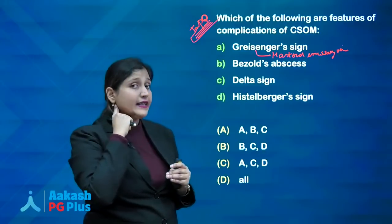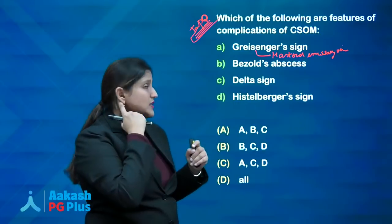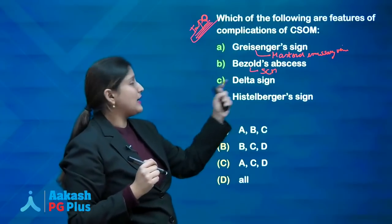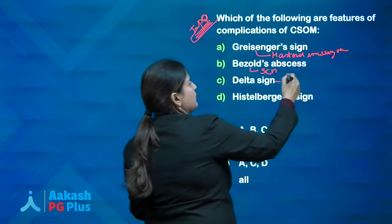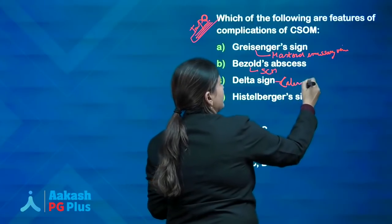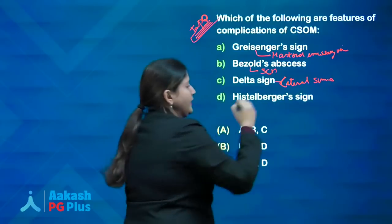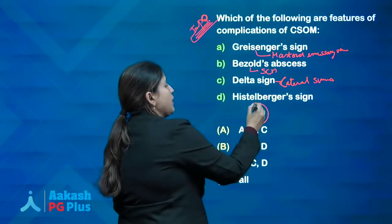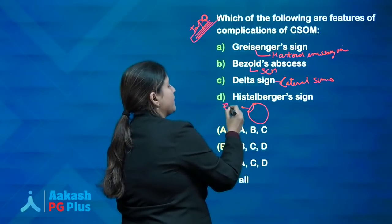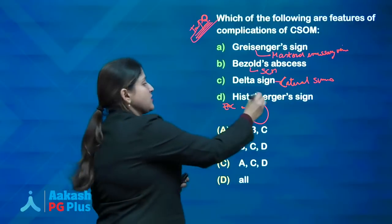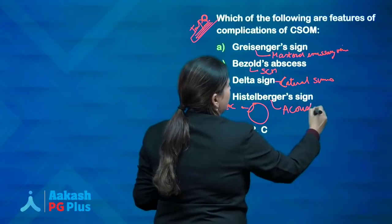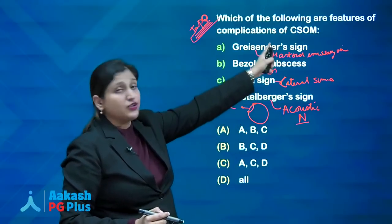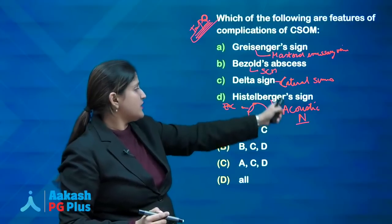Bezold's abscess is an abscess near the sternocleidomastoid due to mastoiditis. Delta sign is a sign in lateral sinus thrombosis — thrombosis is present with blood still flowing alongside. Hitzelberger sign is hypoesthesia of the posterior superior external auditory canal wall due to compression of the facial nerve, and it is present in acoustic neuroma — not a complication of CSOM. So the answer is ABC: Grisinger sign, Bezold's abscess, and delta sign are complications of CSOM; Hitzelberger sign is not.